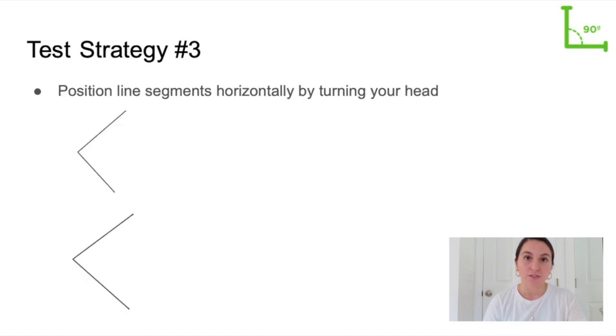Another strategy you can use is to try to position the line segments horizontally by slightly turning your head. If you do that you can tell that the second angle is slightly less than 90 degrees. Once I have moved the angles to have the bottom line segments horizontally you can easily see that the second angle is the smaller angle.